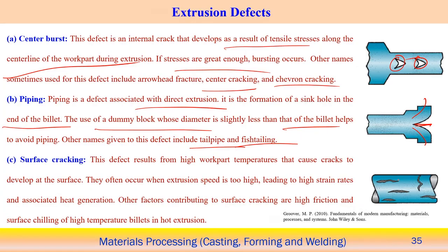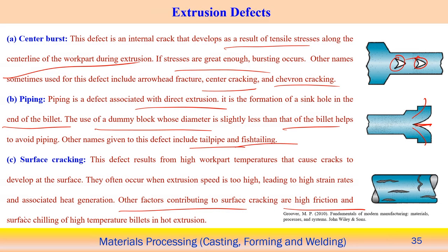Surface cracking is usually associated with hot working conditions when a temperature gradient occurs on the surface, causing the material to expand and contract differently, creating surface cracks. Other contributing factors include high friction and surface chilling of high-temperature billets during the extrusion process.